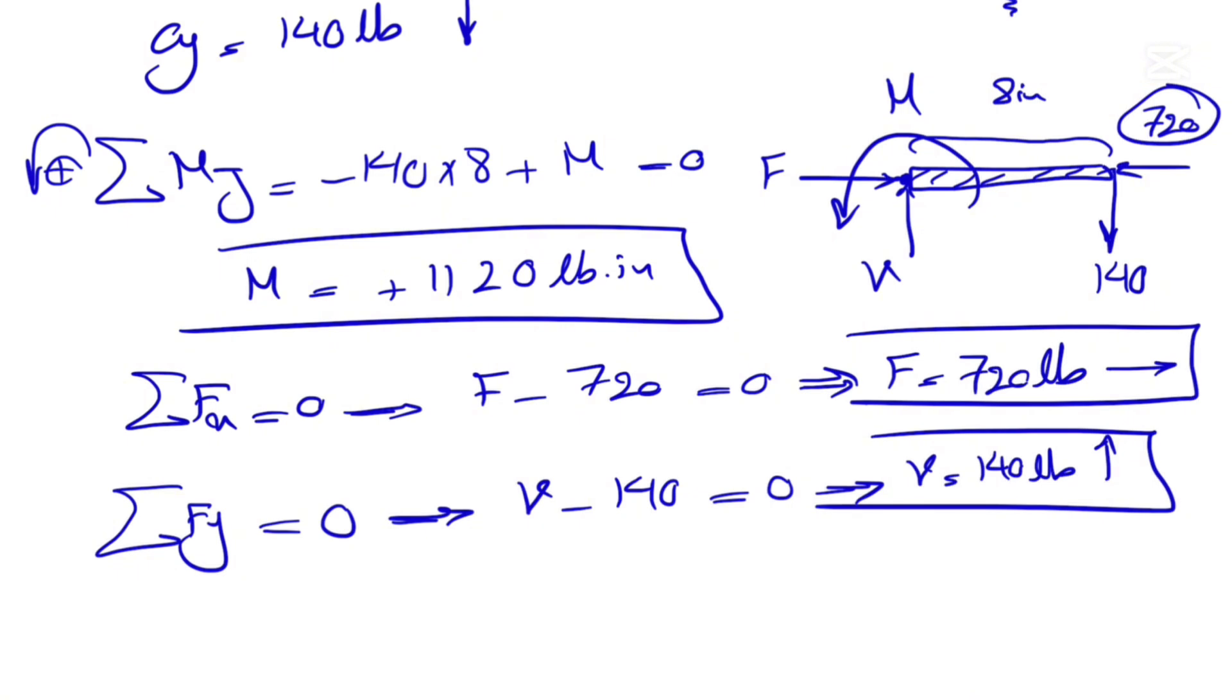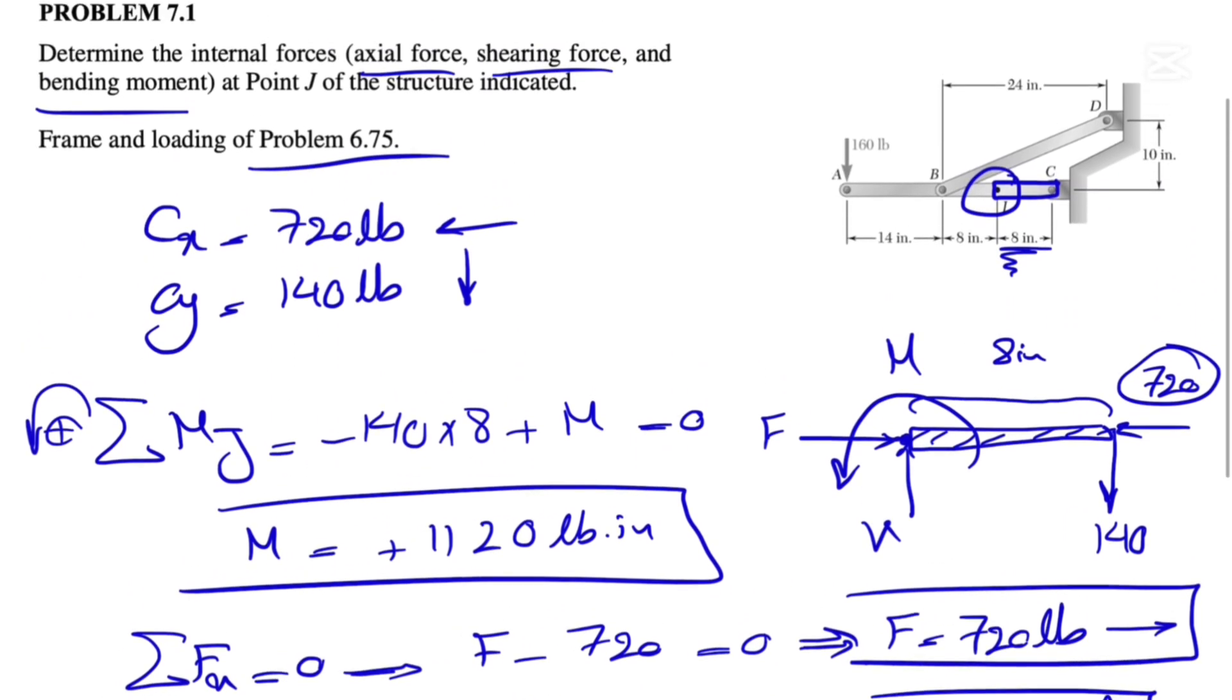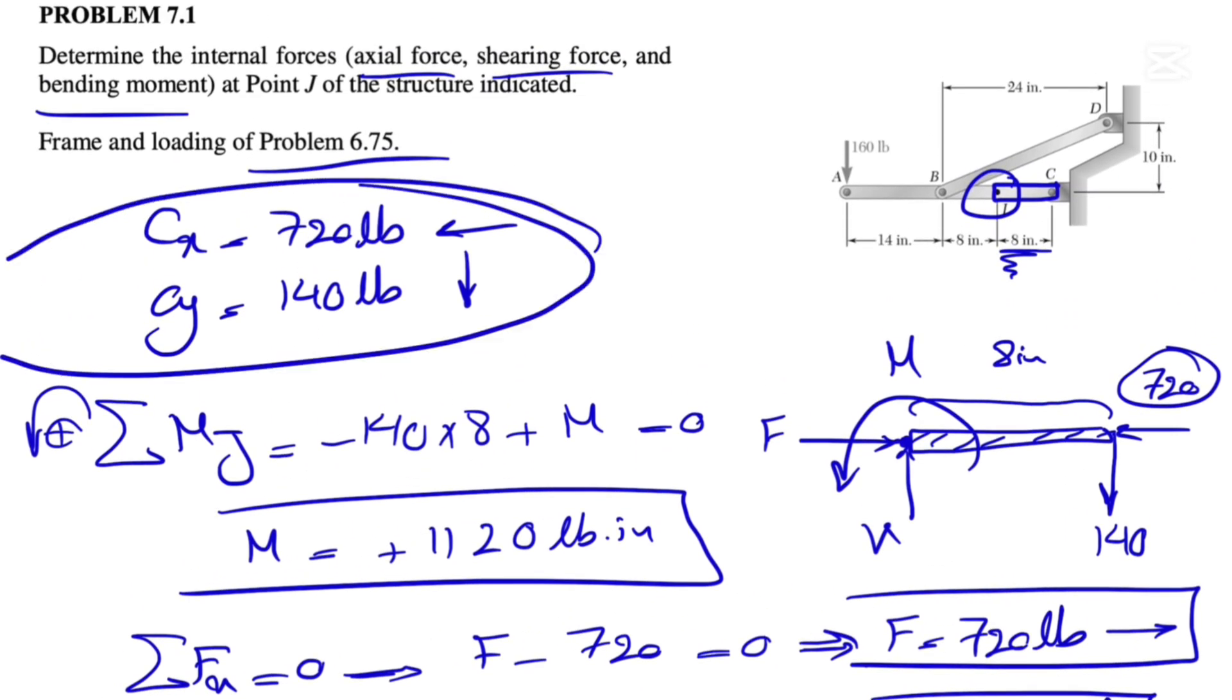And yeah, that's pretty much everything for this question. Let me know if you guys have any questions. Again, in question 6.75, we solved how we can get this CX and CY. I'll quickly go with the free body diagram of the member ABC and we are in equilibrium, same scenario, and we can find CX and CY. You guys take care, we'll see you in the next one.